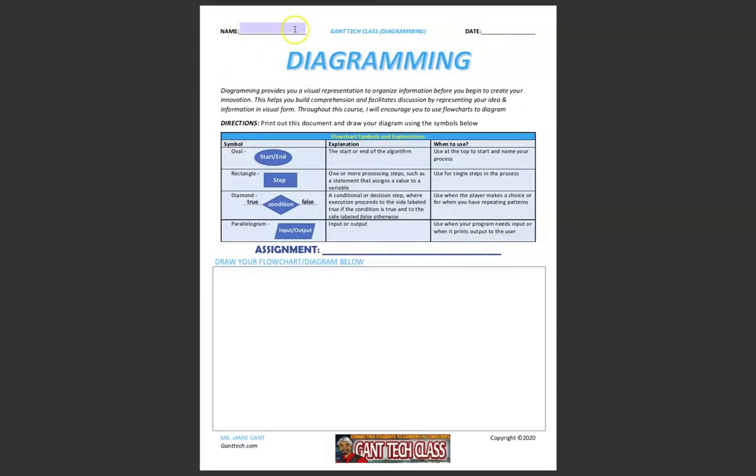In this activity, make sure you put your name here, put the date here, and then you're going to print this out and put your assignment title here. Then you're going to use these symbols to draw out your diagram below.